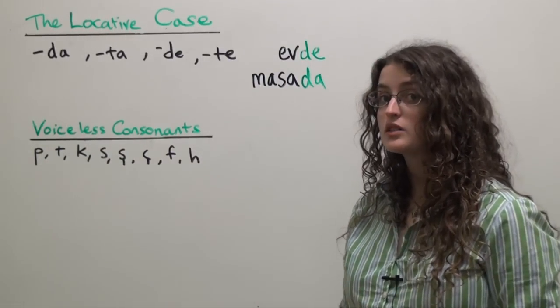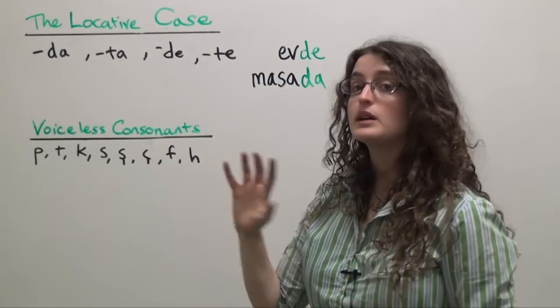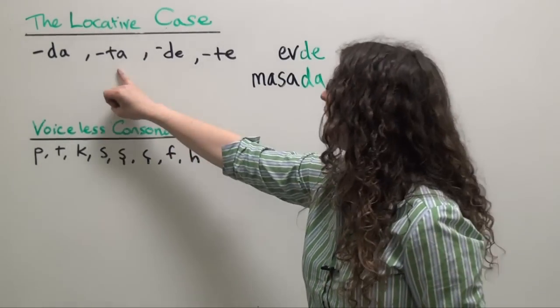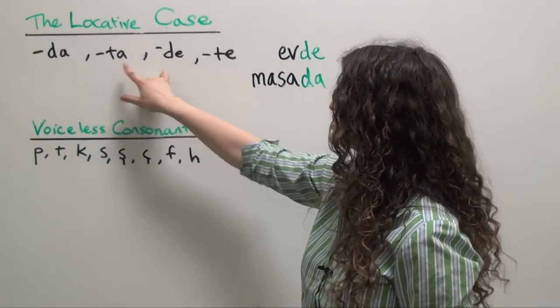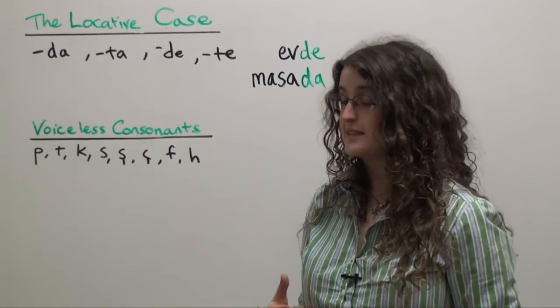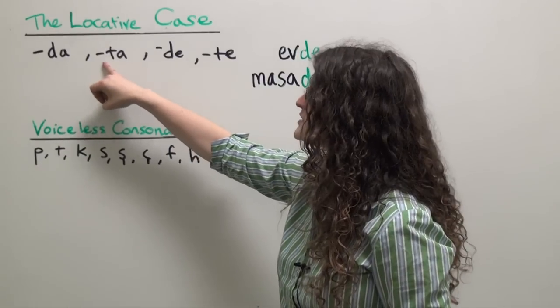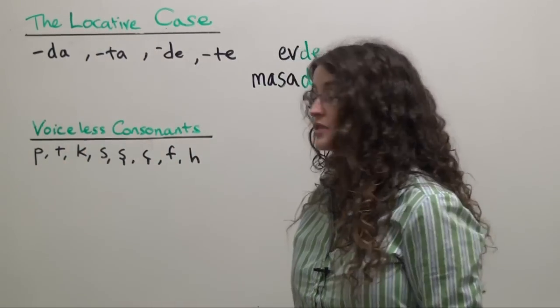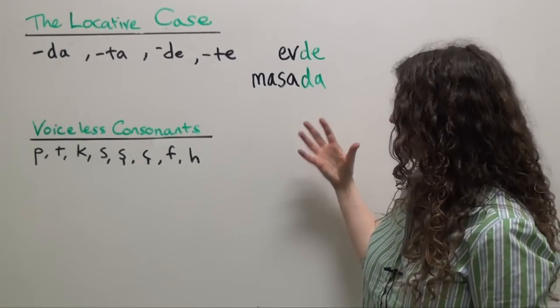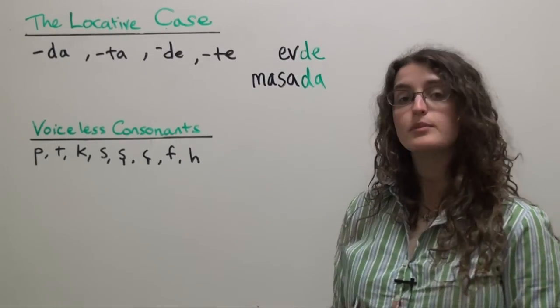You are not going to use da or de, but instead ta or te. These two versions of the locative case ending, ta and te, you'll notice they also begin with one of our voiceless consonants. So in other words, if you have a noun that ends in a voiceless consonant, like for example...